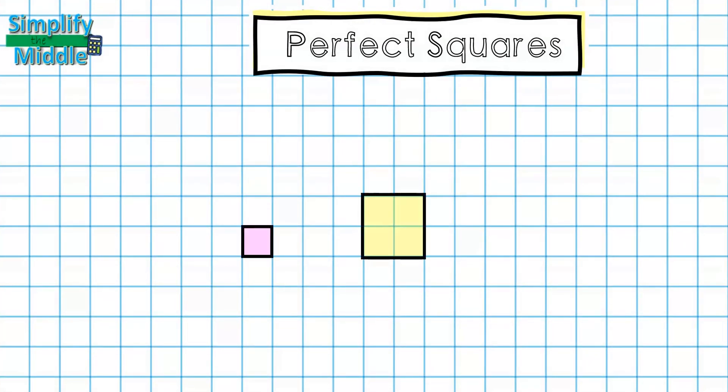Take a look at the following quadrilaterals. We know that these are all squares because they have the same length and width.